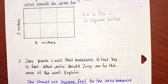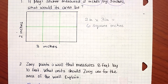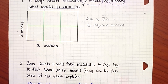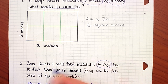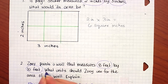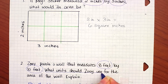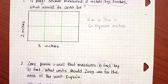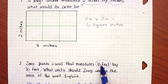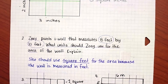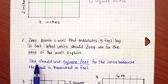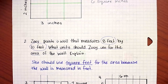For question number two, it says Zoe paints a wall that measures eight feet by ten feet. What units should Zoe use for the area of the wall? Explain. Since she's measuring with feet, she should use square feet. If the length is measured in feet, then the area should be measured in square feet.